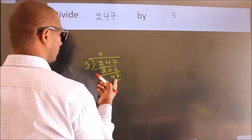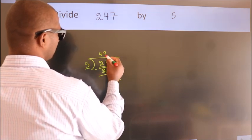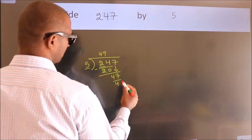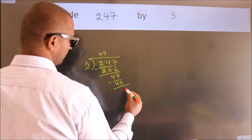A number close to 47 in 5 table is 5 times 9 is 45. Now we subtract. We get 2.